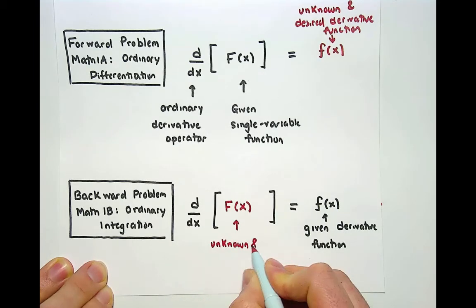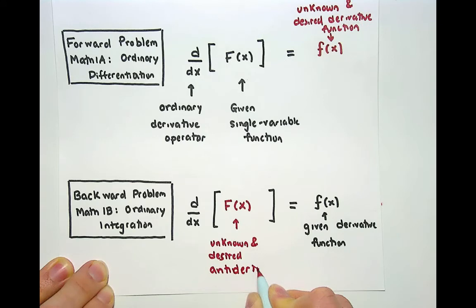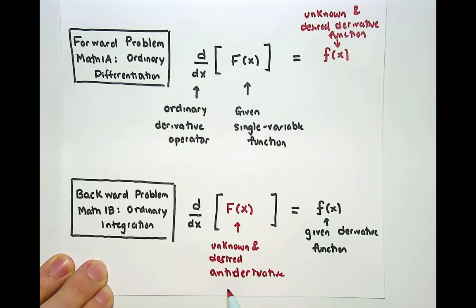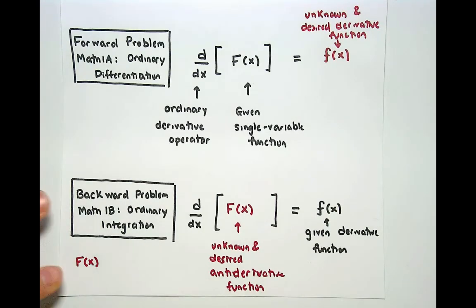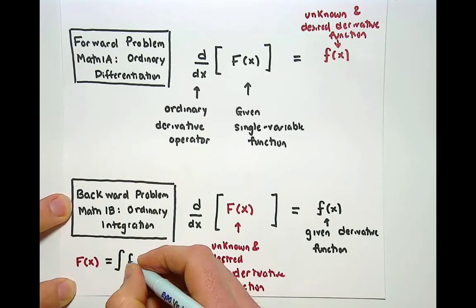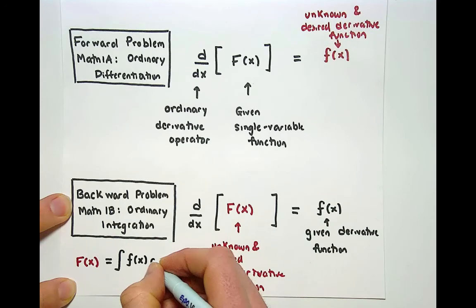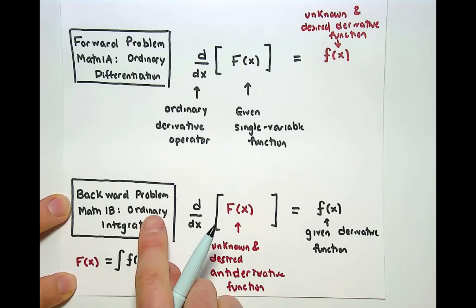In this case the unknown and desired function is the anti-derivative. Of course in your second calculus class you used a little different notation. You said the anti-derivative function that I'm searching for should be written as capital F(x) and we'll produce this by taking the integral of lowercase f(x) the given derivative function with respect to the variable x.